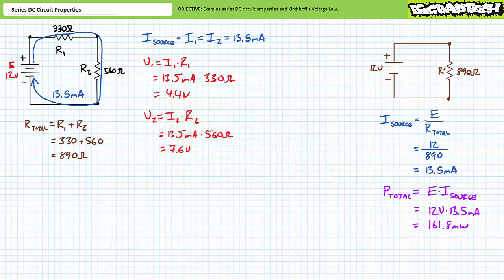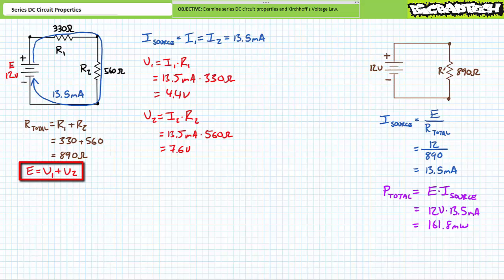Yet another fundamental series circuit property lies easily within our grasp. The observant among you will note that the summation of voltage drops, V1 plus V2, equals the voltage rise induced by the source E. 4.4 plus 7.6 equals 12 volts. In summary, what goes up must come down. This is Kirchhoff's voltage law, yet another fundamental series circuit property.